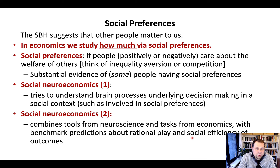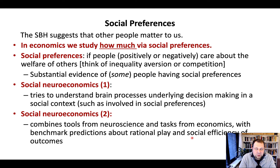We've discussed the social brain hypothesis, which suggests that other people matter to us — our brains may have evolved to adapt to the complexities that social environments bring. In economics, we study how much other people matter to us via social preferences. Social preferences refer to whether people positively or negatively care about the welfare of others. There are a number of formalizations of these types of social preferences.